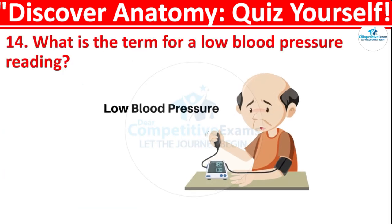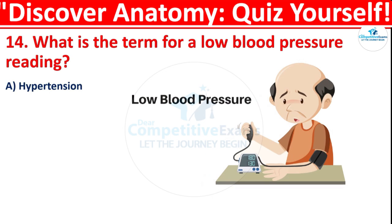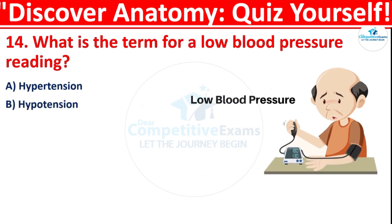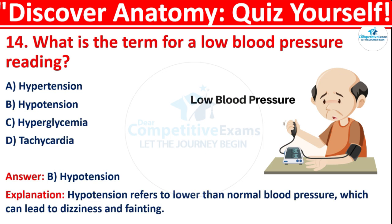Question 14: What is the term for a low blood pressure reading? Your options are: Hypertension, Hypotension, Hyperglycemia, or Tachycardia. The correct answer is Hypotension. Hypotension refers to a lower than normal blood pressure, which can lead to dizziness and fainting.